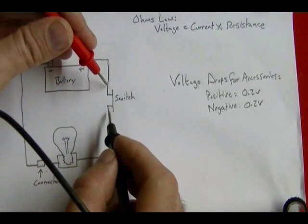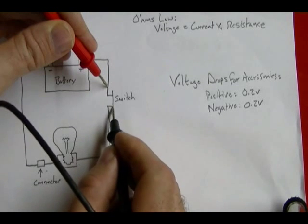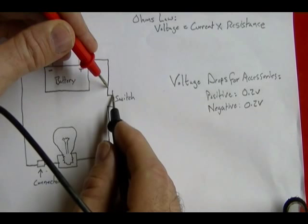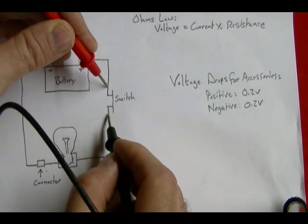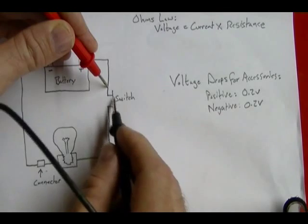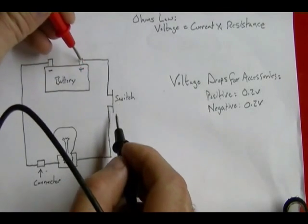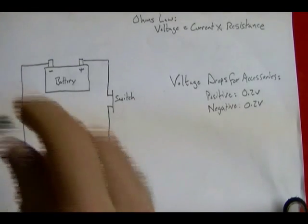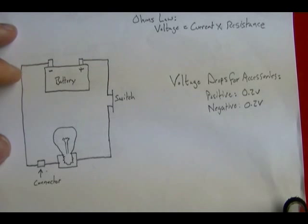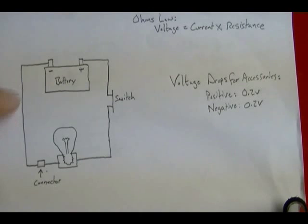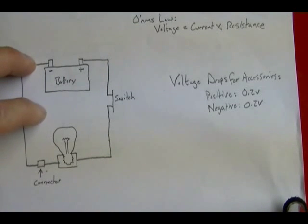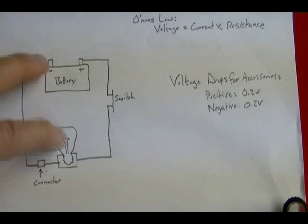I can also test the voltage drop across the switch. The switch has contacts in it and should be making good contact with a very low voltage drop, so switches can be a source of problems. If I get a high voltage drop across the switch, it may be what's causing a high voltage drop on the positive side of the circuit. This type of testing is also called dynamic testing — I have to turn on the switch and have current flowing through the circuit in order to test for voltage drops. If there's no current flowing, I'm not going to have any voltage drops, so the circuit needs to be on.